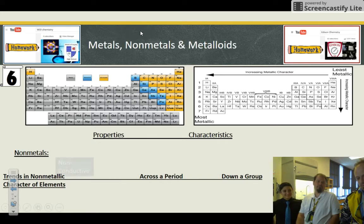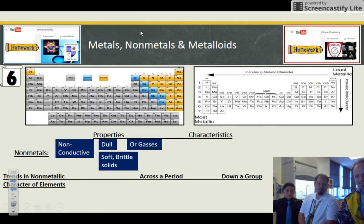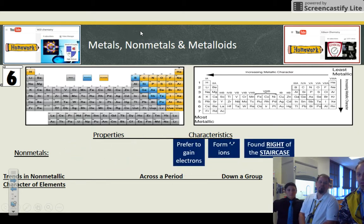You know, you got non-metals. These are going to be non-conductive, dull, soft, brittle solids or gases. These are the ones in blue up top. Yellow. Good call. And characteristics are that they prefer to gain electrons, form negative ions, and they're found right of the staircase. So that's the yellow one.